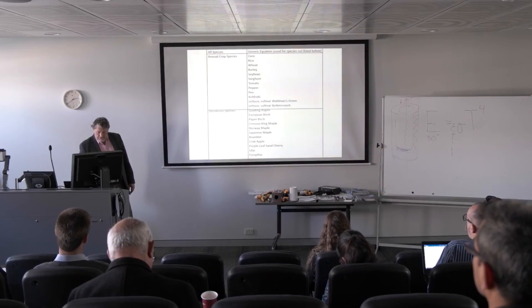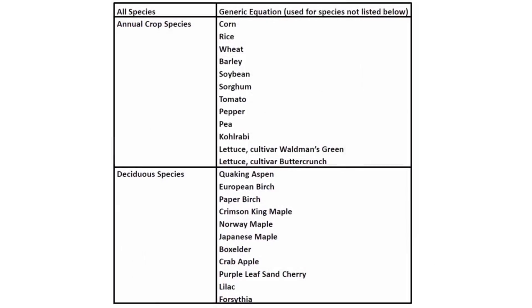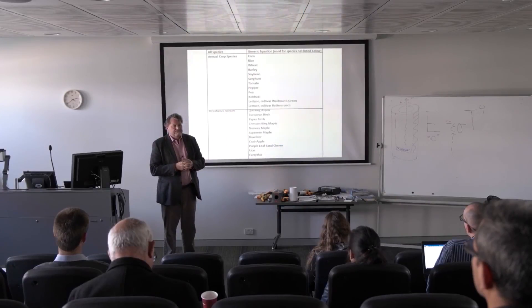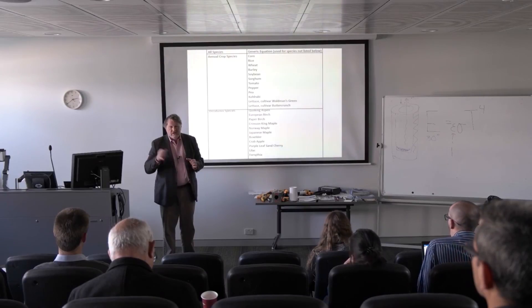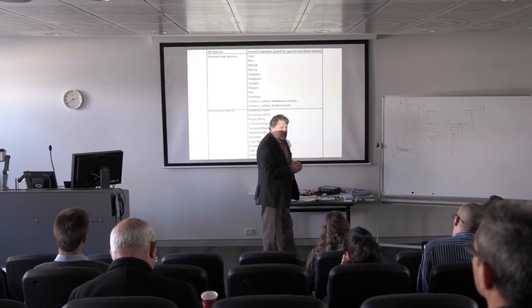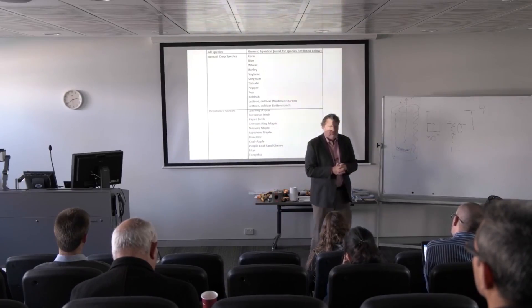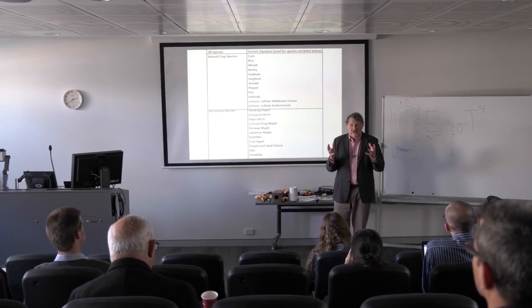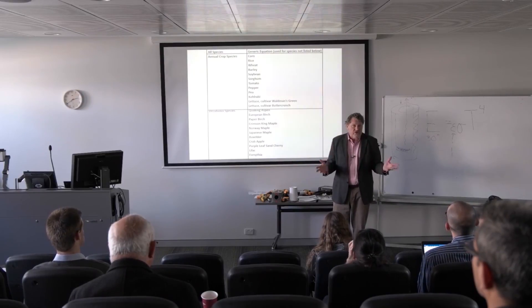These are the species that are programmed in and not surprisingly lots of economic agricultural species. It also has a generic index for species that haven't been precisely characterized yet. The difference is reading out in a physiological unit amount of chlorophyll per meter squared rather than just some index so for physiological studies we're really interested in that.